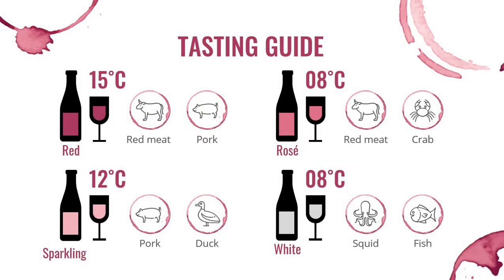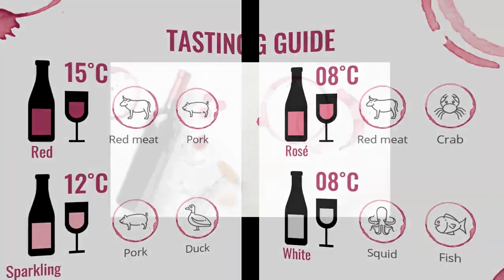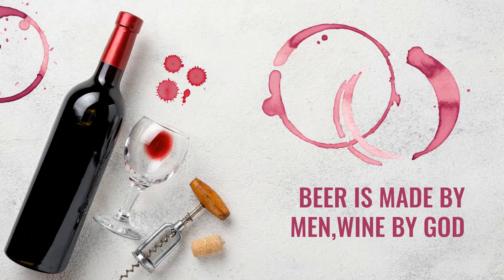Wines are served at specific temperatures and pair with specific foods. When a guest is eating red meat, the suggested wine is a red wine. If the guest is eating white meat, the suggested wine is a white wine. Red wines are served at room temperature, white wines are served cold, rosé are served cold, and sparkling wines can be served at room temperature or cold — mostly sparkling wines are served during celebrations. There is a quote: beer is made by men, but wine is made by God.